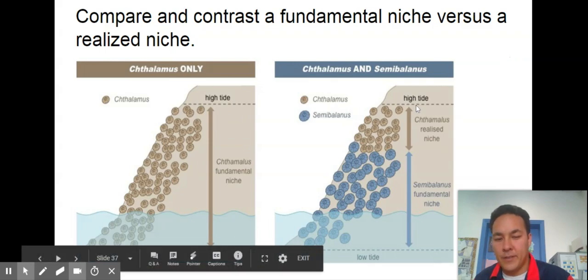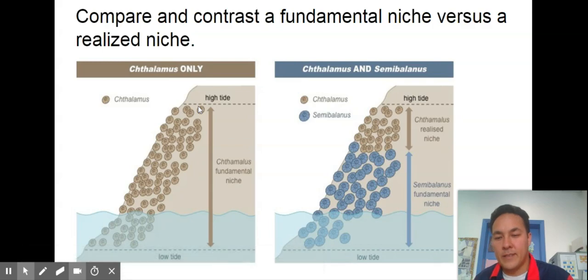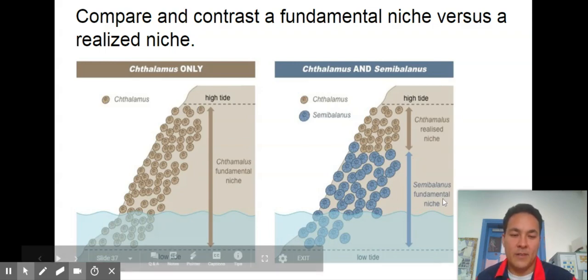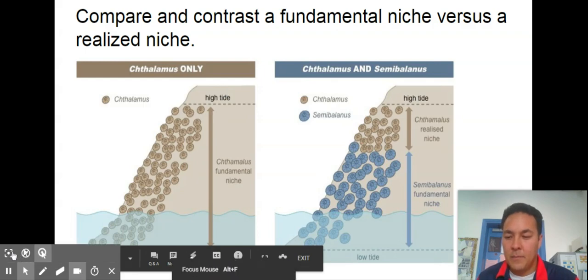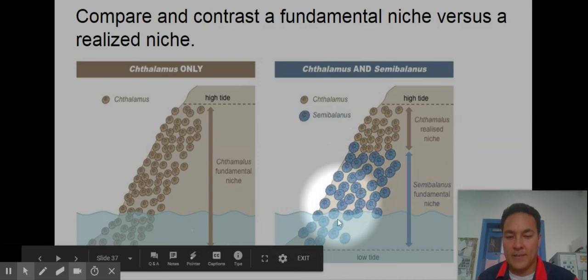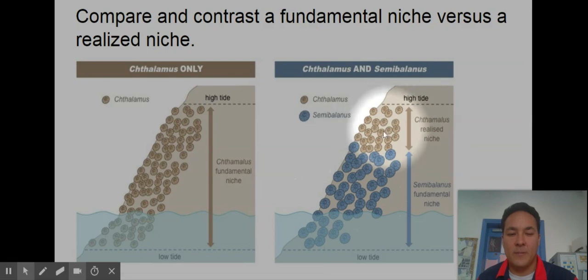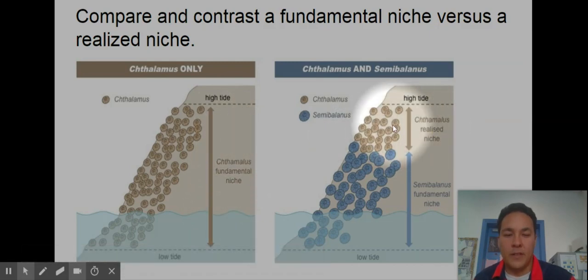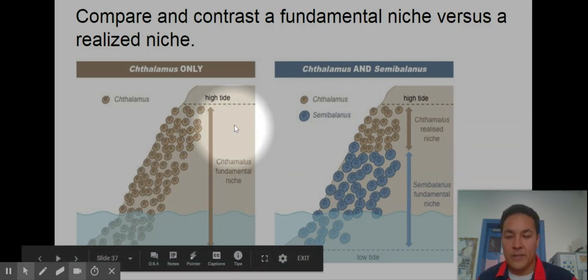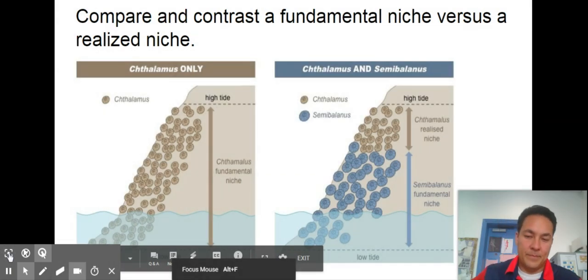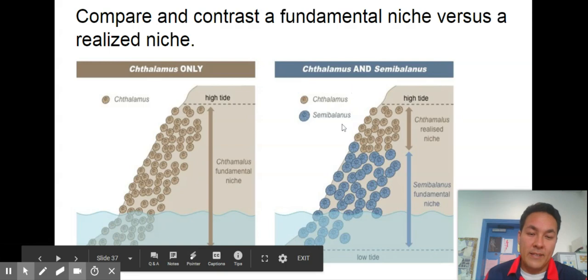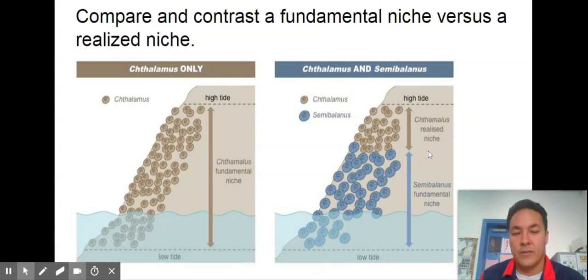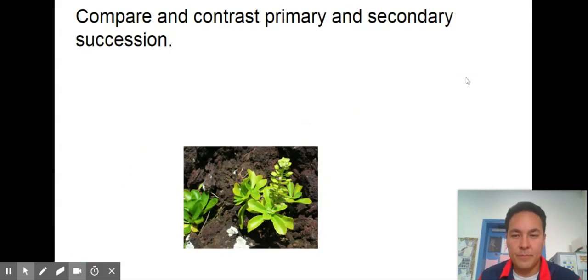Here is a fundamental niche versus a realized niche. This was in your chapter three to six selected reading questions. Here's a barnacle called Chthamalus and one called Semibalanus. Semibalanus is slightly bigger. Chthamalus can live in this whole area and is happy to. But when Semibalanus is around, it's bigger and lives there, and Chthamalus' niche gets squeezed to this area. The big area is called the fundamental niche, where you could go, where you could live. But your realized niche is where you're squeezed into. The example I use in class is your fundamental niche is you could be a student anywhere in Muscat, in any high school. But your realized niche because you've chosen to go to Taysom is right here at the American International School of Muscat.